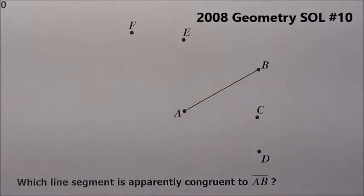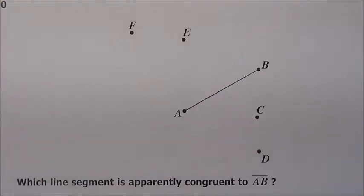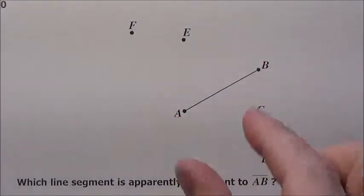Alright, here's problem 10. I've zoomed in on it so we can see it better so you don't see the options. But problem 10 says which line segment is apparently congruent to line segment AB. That means we want somebody that's the exact same length as AB.